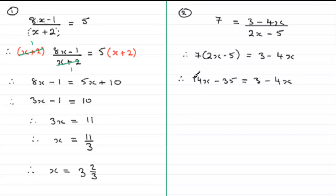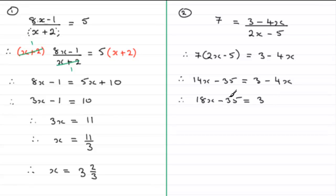I've got a bigger x term on the left, so I'll add 4x to both sides to remove the minus 4x from the right. So 14x plus 4x gives 18x, then minus 35 equals 3. Now add 35 to both sides: 18x equals 3 plus 35, which is 38. Divide both sides by 18: x equals 38 over 18.